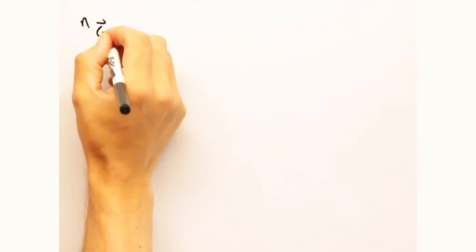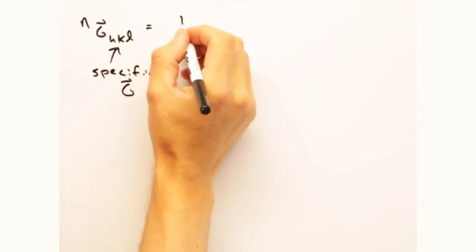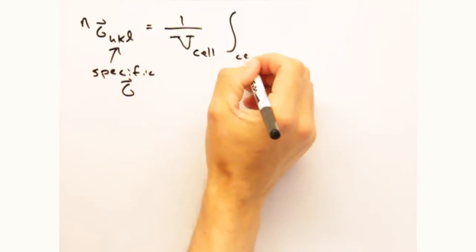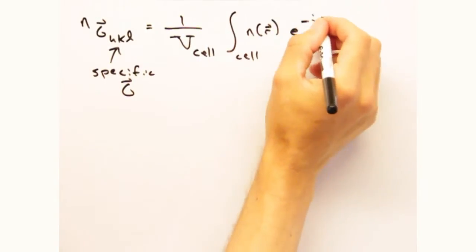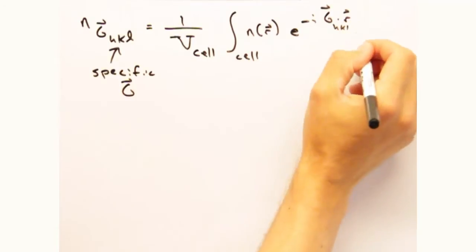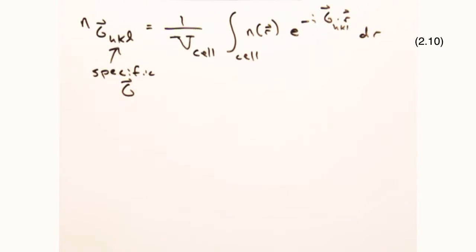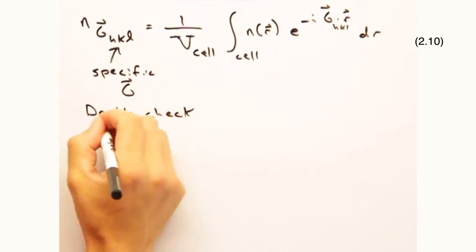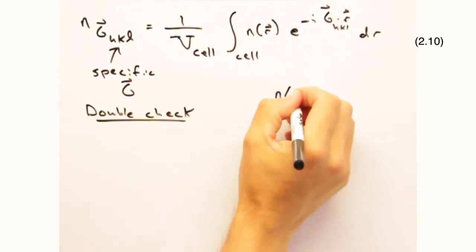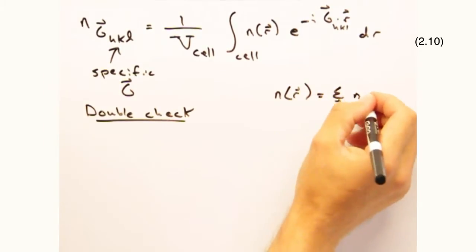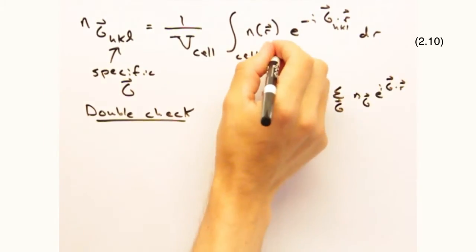So to get to intensity, we first have to solve for our Fourier coefficients. Because we built n of r as a Fourier series, we can solve for the Fourier coefficients, n sub g, by taking the inverse transform. And we can do this because we don't have any absolute square funny business like we do in the intensity equation. All the phase information of the original n of r is still maintained in the inverse transform.